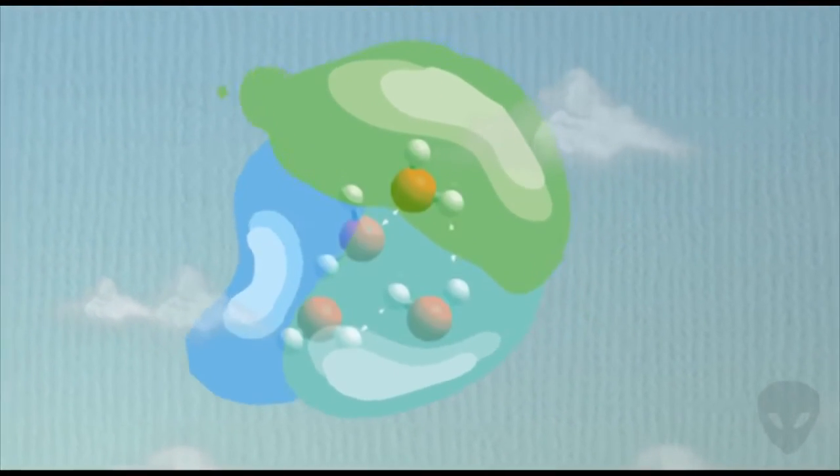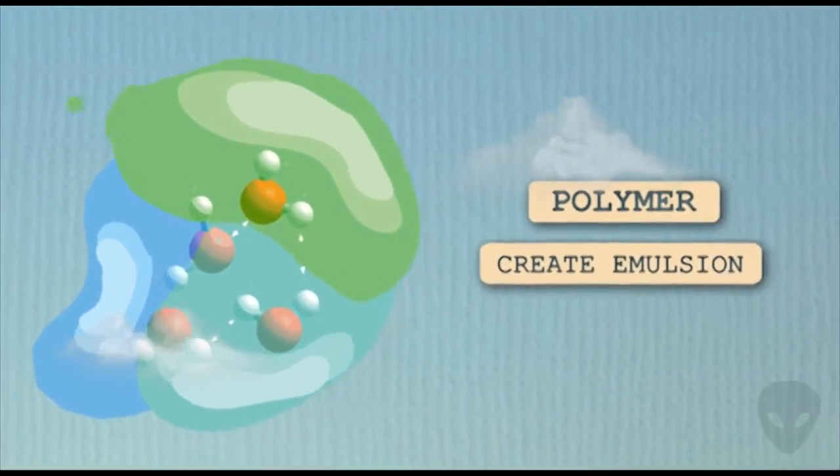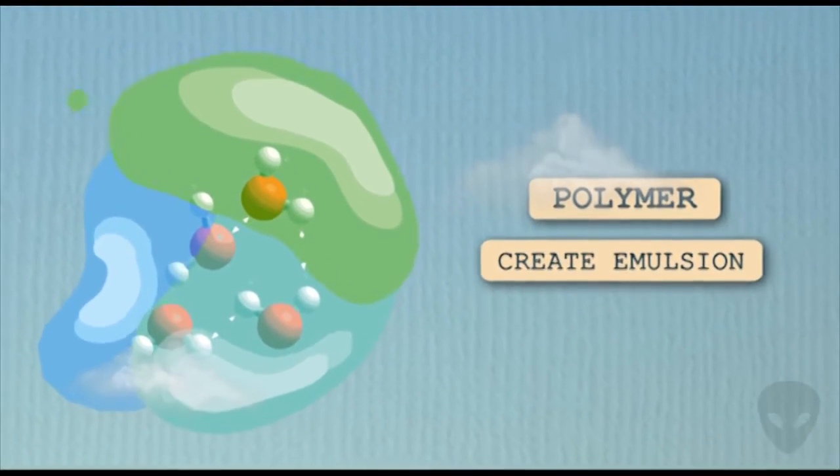The second one was polymer method. The reason to implement polymer injection is to make an emulsion front, so the oil bank can be easily swept away by increasing the vertical and areal sweep efficiency.